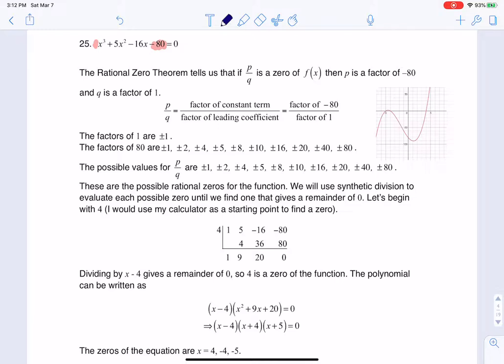In this case, if we look at our constant term, that was -80 and our lead coefficient was 1. The lead coefficient is easy because there's only factors of plus or minus 1. But look at the shenanigans for 80, look at how many options you have.